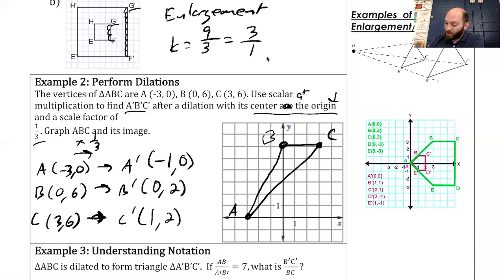A prime is going to be at negative one, zero. B prime is at zero, two. C prime is at one, two. There's A prime, B prime, C prime. One thing I always like to highlight is if I draw a straight line connecting all of my images to pre-images, they all intersect at the center of dilation. The distance from the center of dilation to each point is what's being expanded or reduced.